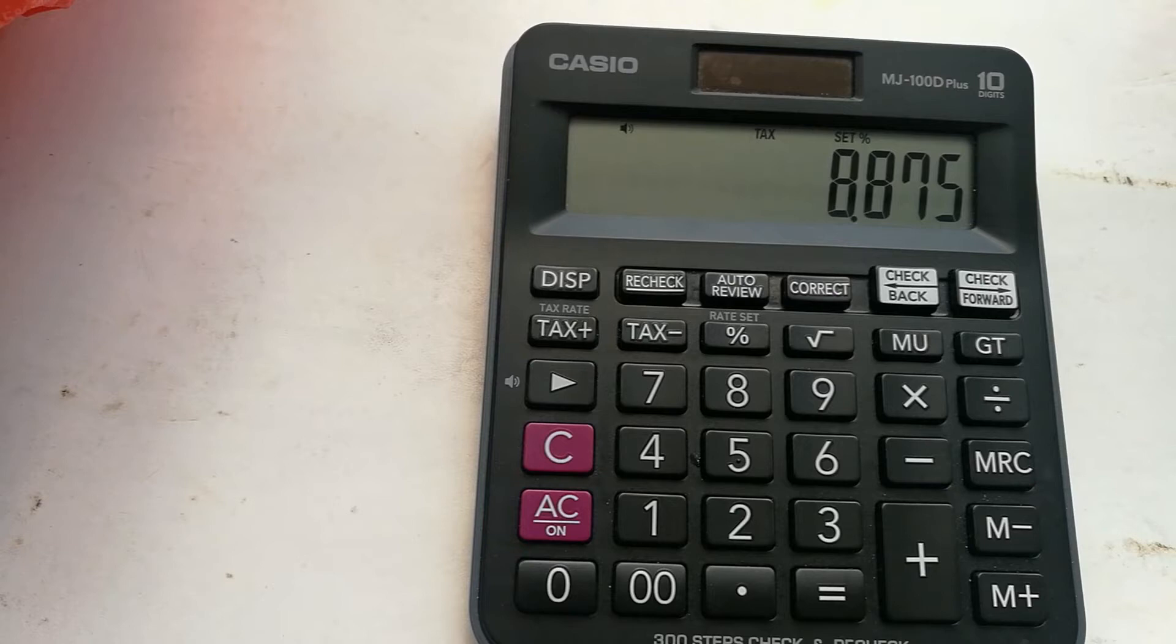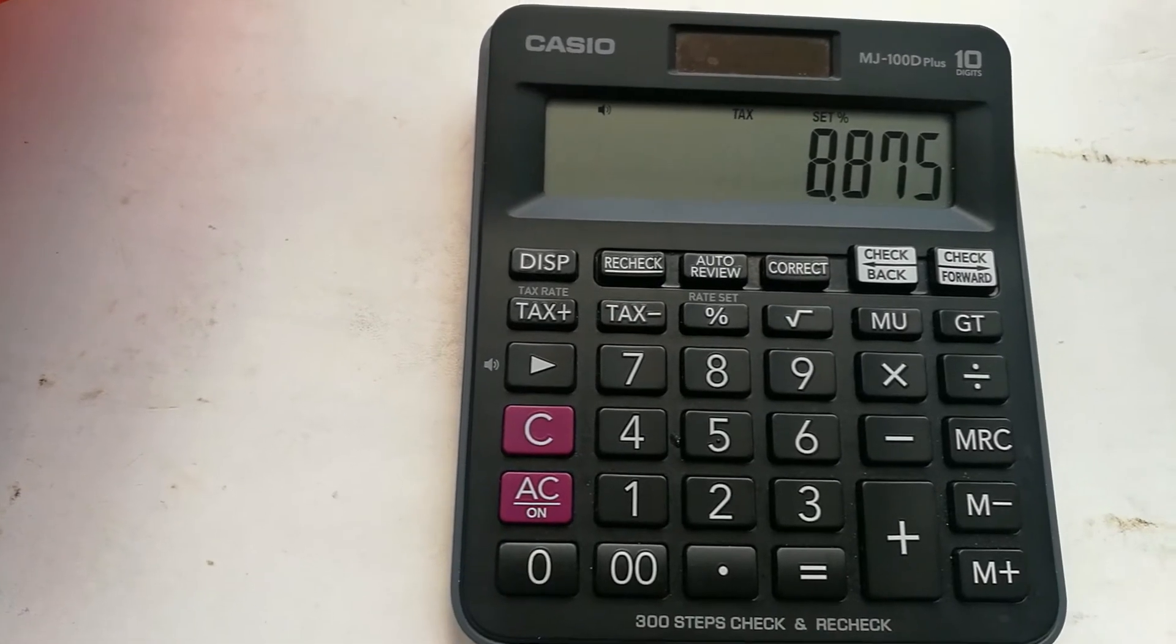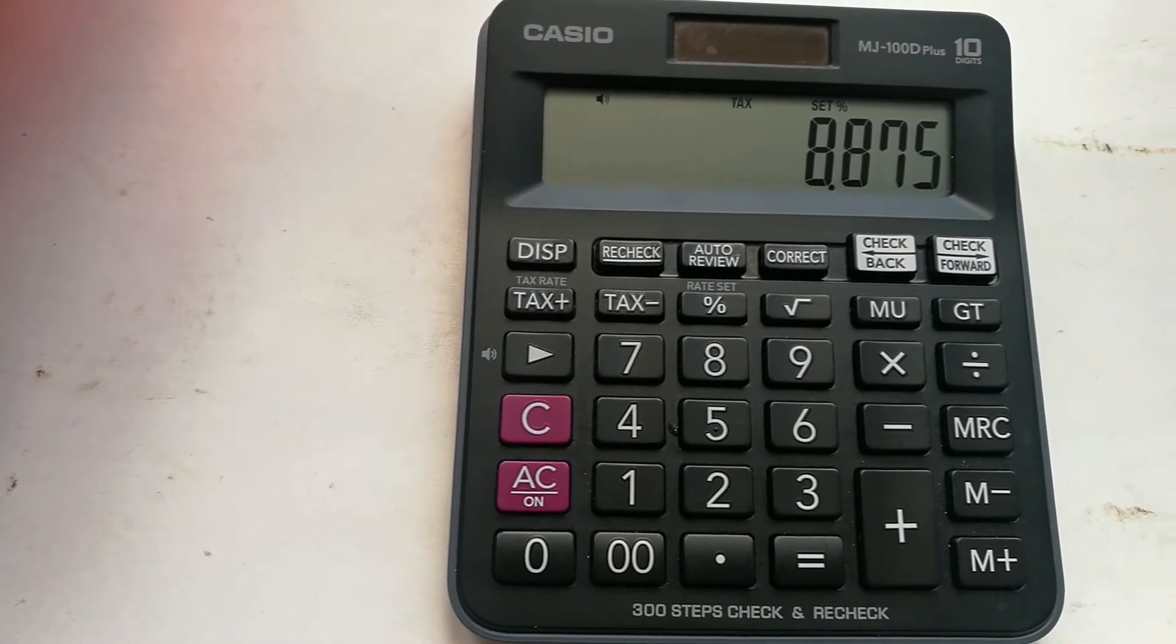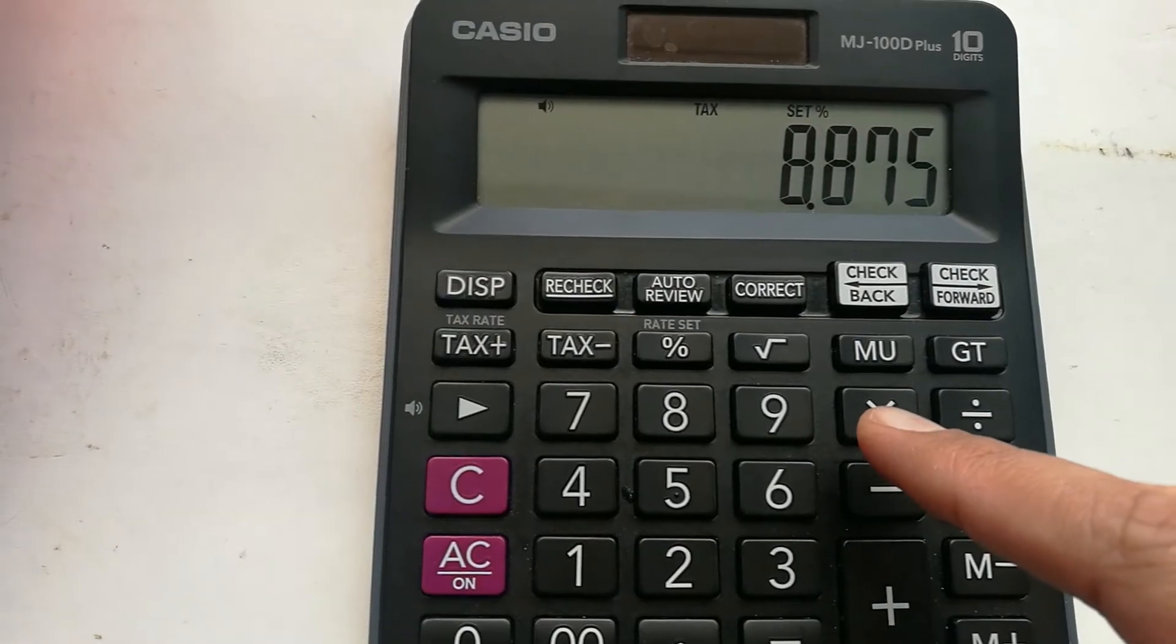So what I will do, I will write 8.875 and then I press multiply button. I press multiply button.